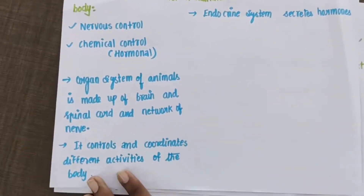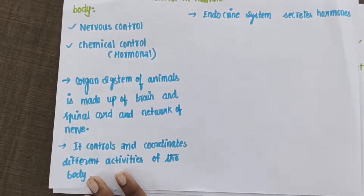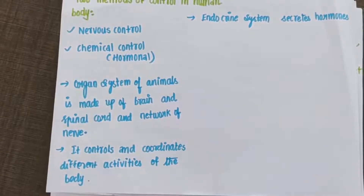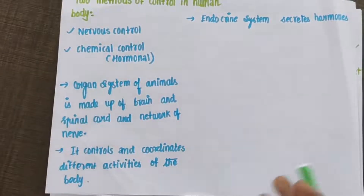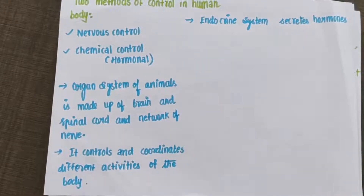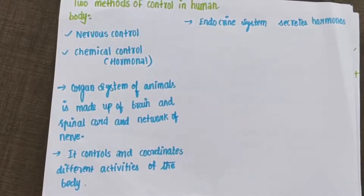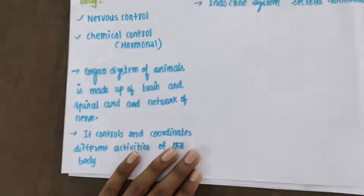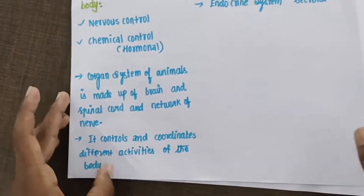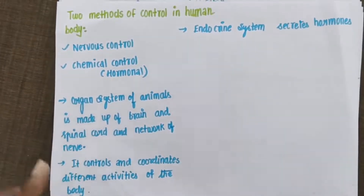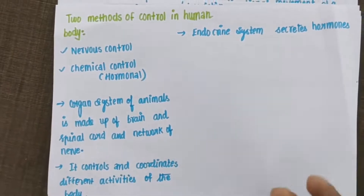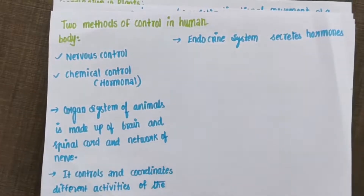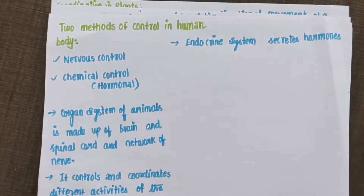The organ system of animals is made up of the brain, spinal cord, and a network of nerves. The brain, spinal cord, and nerves control and coordinate the different activities of the body. The endocrine system secretes hormones, and these hormones act as chemicals in the body.